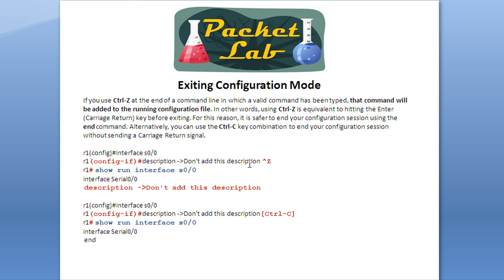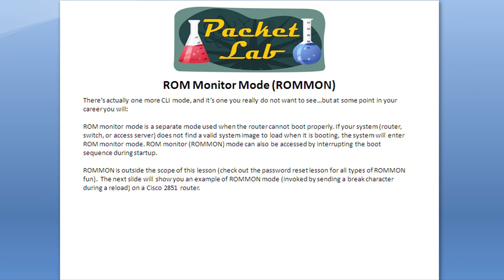You need to be aware that Control Z after a valid command will execute that command, and on Cisco devices as soon as you execute a valid configuration command it gets applied. The way to handle this is to use Control C instead. Same scenario — we get to the description, I hit Control C, and I'm pushed back into privileged exec mode. When I look at the running configuration for that interface, I see that the description has not been applied. It's very important to recognize the difference between these two keyboard shortcuts, because Control Z could get you into serious trouble. Honestly, before researching this lesson I didn't know the difference — so I'm going to start using Control C going forward.